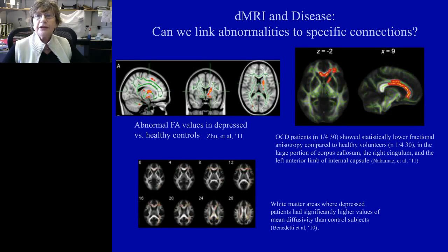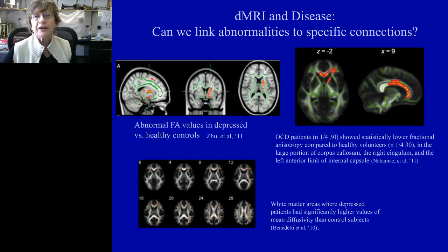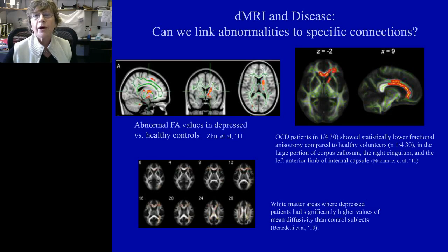Here are three different studies showing white matter abnormalities — the red indicating abnormalities in FA values. One study is in depressed versus healthy controls. Another is demonstrating a study in OCD, and another in depressed individuals compared to healthy controls. What you can see is that in these white matter studies, you don't see the entire white matter outlined in high FA values, but rather a specific part of the internal capsule or a specific part of the corpus callosum. The question is: what specific fibers might be going through those regions?